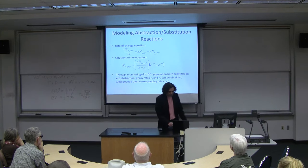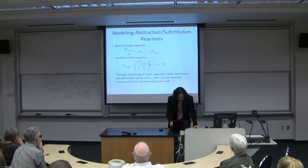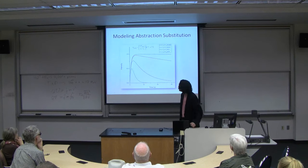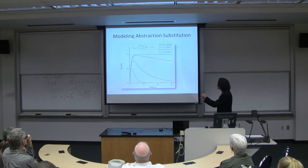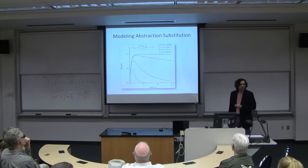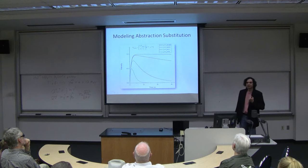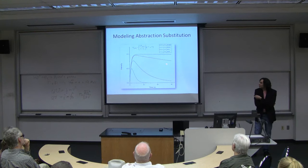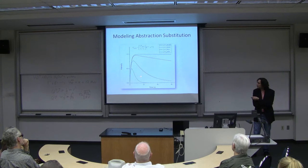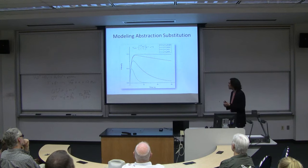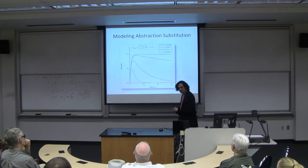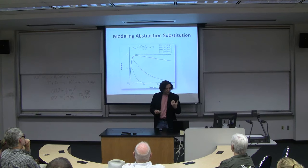I ran a simulation and plotted what the population curves look like for different R2-to-R1 ratios. Black is 1000-to-1 substitution-to-abstraction; red is 100-to-1; blue is 10-to-1; green is 2-to-1. This is not actual data — just modeling to show what the fit should look like.